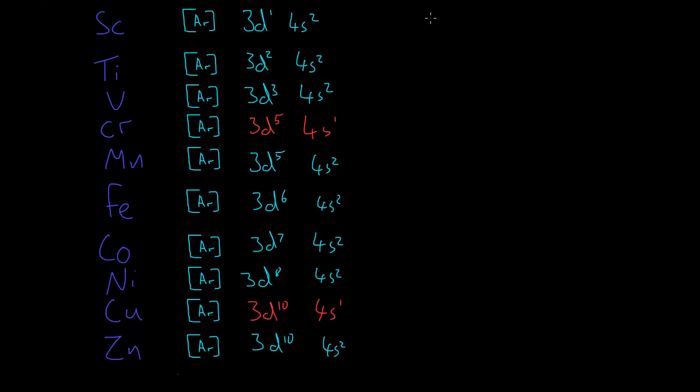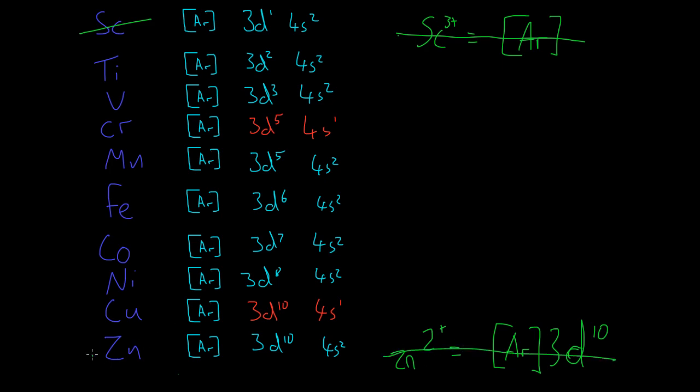If we look at scandium, when we form an ion we lose 3 electrons. So we go from having this 3d1 4s2 to just having the electron configuration of argon. And using the definition of having an incomplete d orbital when we form an ion, this is not a transition metal. So we can cross scandium off. And if we look at zinc, when we form an ion there we form a 2+ ion. And then our configuration there has a 3d10 configuration. And this isn't an incomplete d orbital because this is full. So this isn't a transition metal either, so we can cross zinc off.